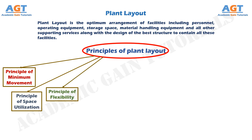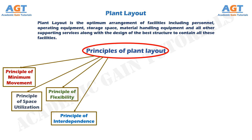The layout should be flexible enough to be adaptable to changes required by expansion or technological development. Number four: the principle of interdependence. Interdependent operations and processes should be located in close proximity to each other to minimize product travel.